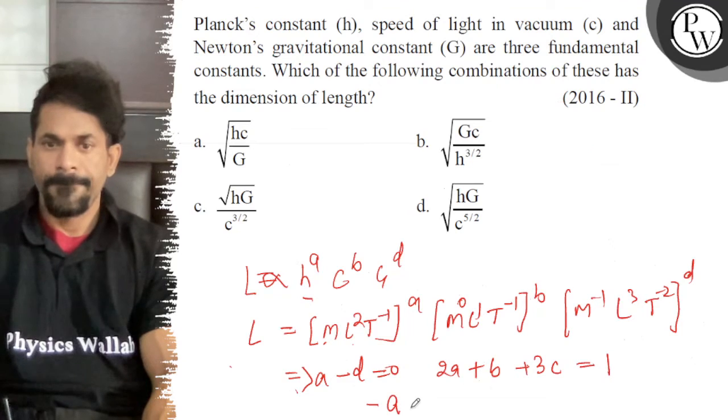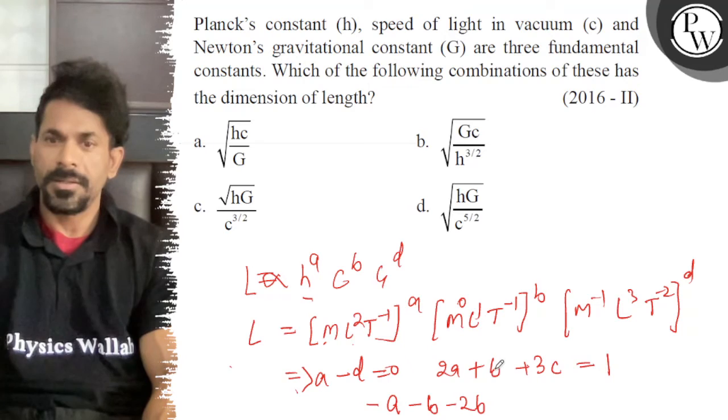T to the power minus a minus b minus 2d. This is d, not b.